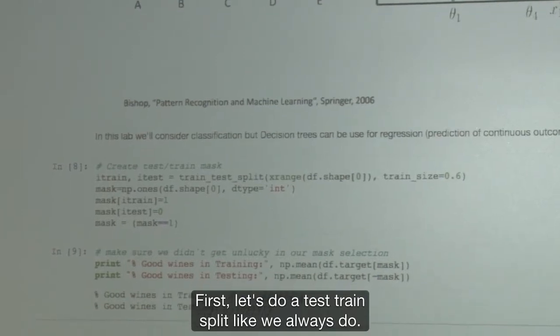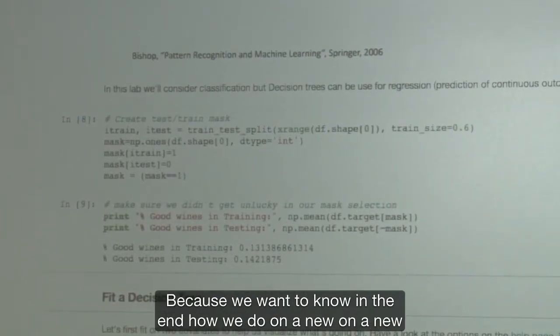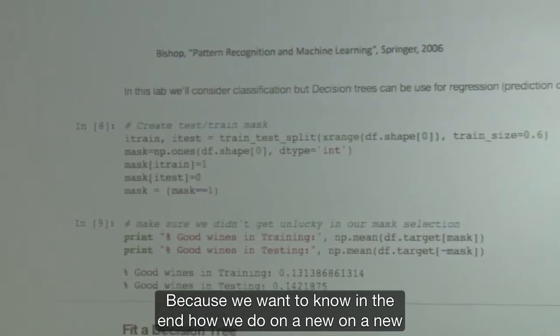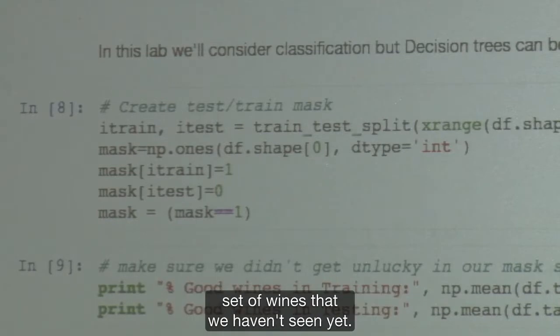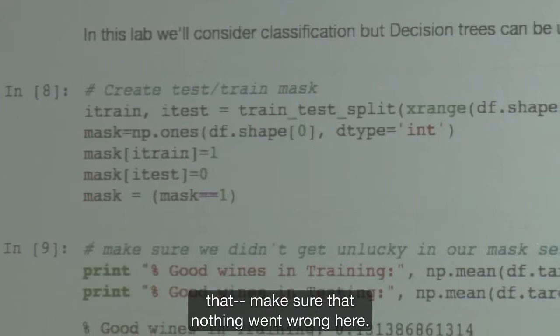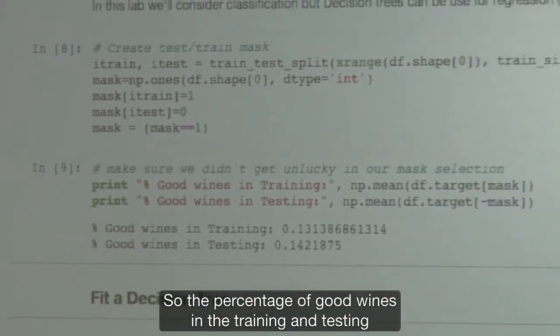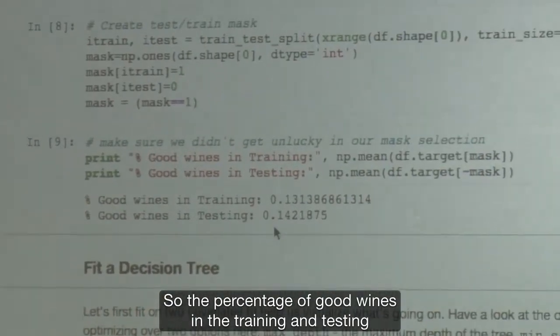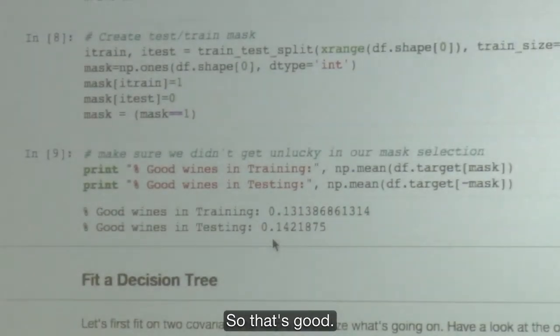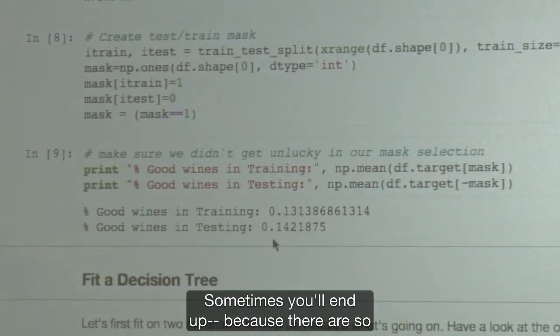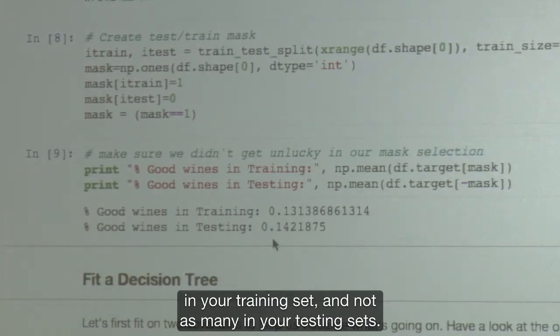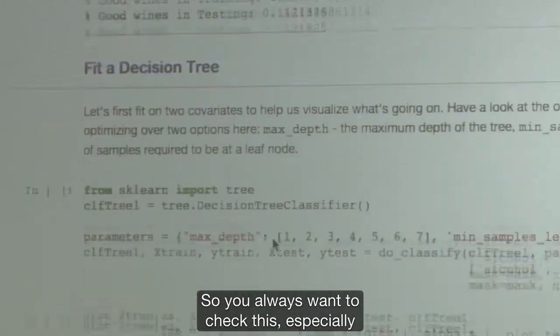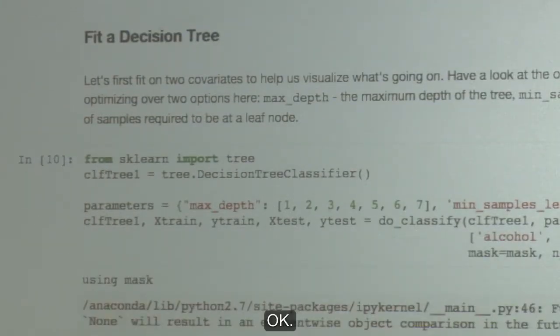First, let's do a test-train split like we always do, because we want to know in the end how we do on a new set of wines that we haven't seen yet. Let's just make sure that nothing went wrong here. So the percentage of good wines in the training and testing is about the same. So that's good. You always want to check this, especially for the unbalanced cases.